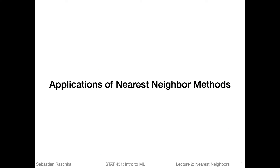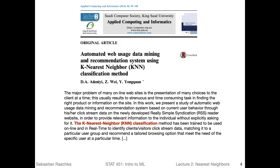Applications can be quite motivating for introducing a topic. So I picked some example applications of K nearest neighbor methods in practice. Here I found a research article entitled 'Automated Web Usage Data Mining and Recommendation System Using the K Nearest Neighbor Classification Method.' The researchers deal with web usage data mining — more specifically, a recommender system. K nearest neighbors are still very commonly used for building recommender systems.